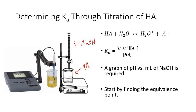To figure out our Ka, which is our weak acid dissociation constant, we need to graph pH on the y-axis and milliliters of sodium hydroxide on the x-axis. By graphing this, we can determine the equivalence point of our titration.